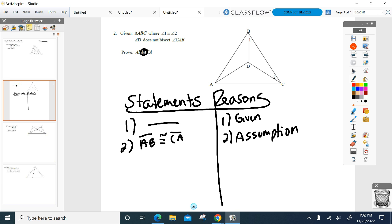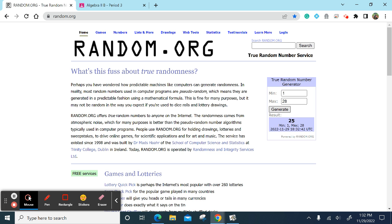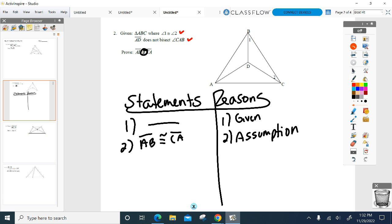I'm going to mark it on my diagram because I'm probably going to need it. Now, before I start writing a bunch of random stuff, I have two givens right here. One congruent to two. AD does not bisect CAB. I'm going to have to contradict one of them eventually. Which one is it going to be easier to contradict out of those two? AD does not bisect CAB. Darn right.